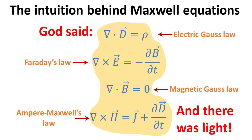We live in an electromagnetic world, and Maxwell's equations provide a complete description of how electric and magnetic fields interact and propagate through space and mediums carrying electric charges and currents. They are summarized in four fundamental equations: the electric and magnetic Gauss law, Faraday's law, and the Ampere-Maxwell's law. In this video, we focus on providing an intuitive conceptual understanding of Maxwell's equations, as well as the basic phenomena these equations embody.